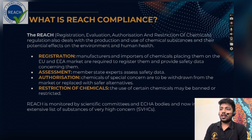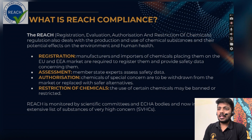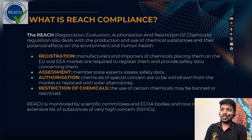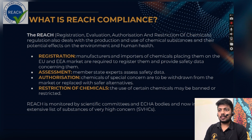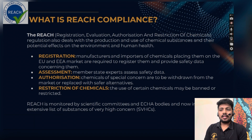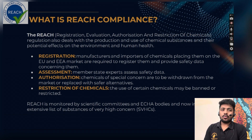Under Authorization, chemicals of special concern must be withdrawn from the market or replaced with safer alternatives. If any concern chemicals are found that are hazardous or should not be used in that product, the manufacturer or importer must withdraw that chemical or use a safe alternative that does not impact human health and the environment. Under Restriction, the use of certain chemicals may be banned or restricted. There is a list known as Substances of Very High Concern (SVHCs) — chemicals and substances that are banned and restricted in the EU.